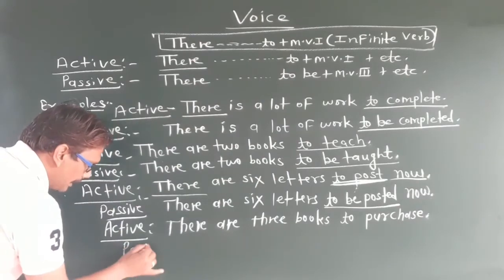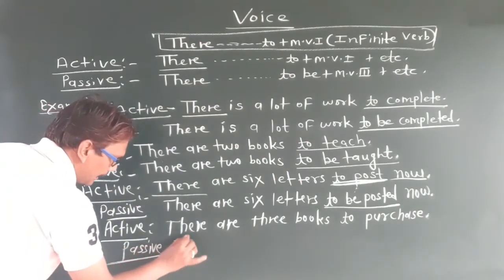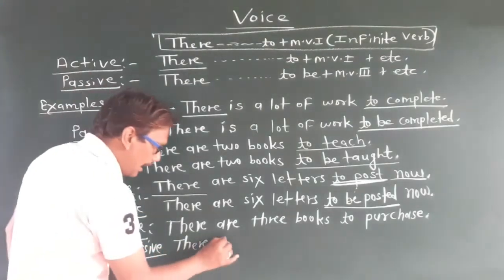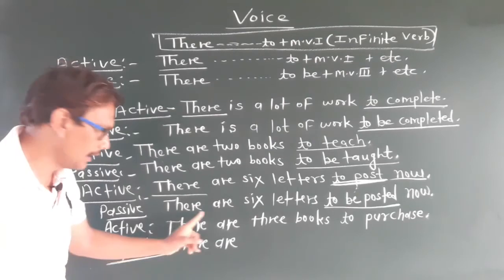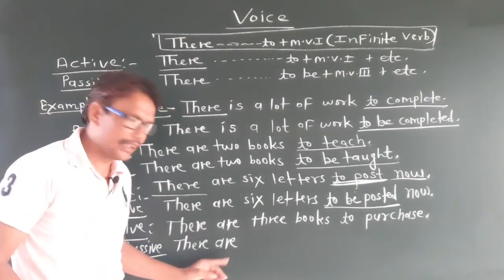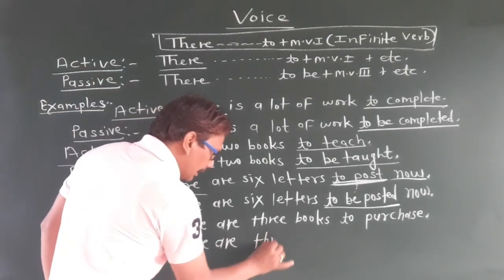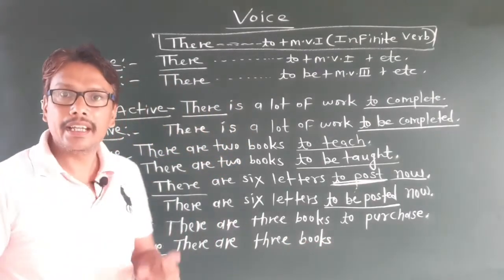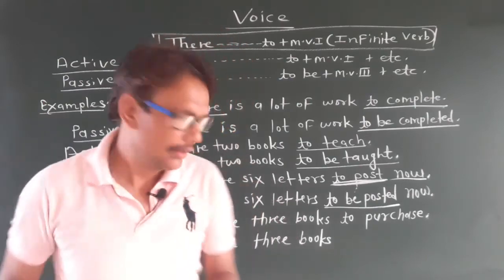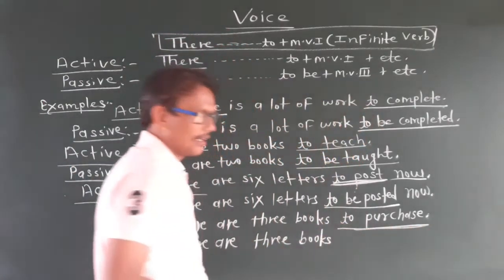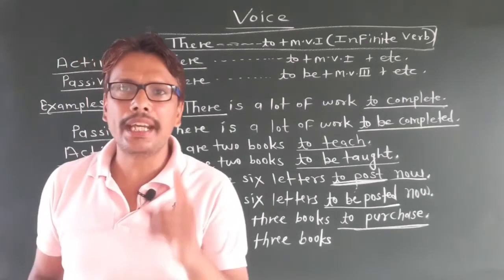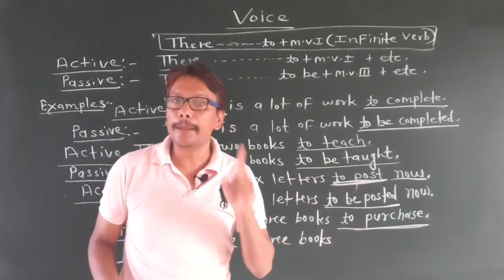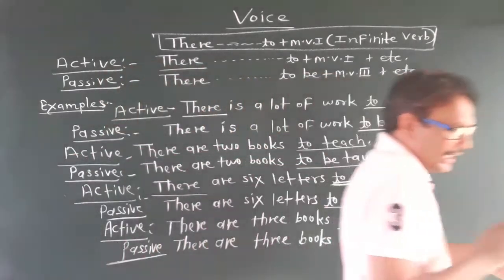In passive voice: 'There are three books' — the sentence begins with 'there are', helping word is given, then 'three books'. At the last part, the infinitive verb 'to + V1' — 'to purchase' — is given, which will be changed. You have to keep in mind: if the active voice sentence begins with 'there' (T-H-E-R-E) and contains an infinitive verb, apply the passive rule.